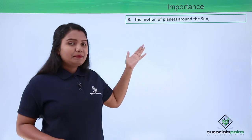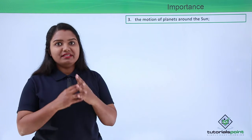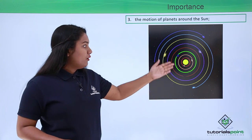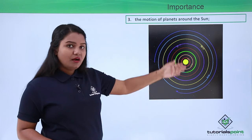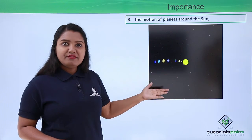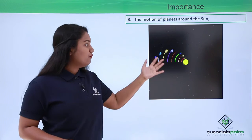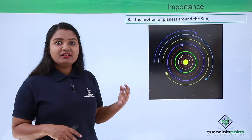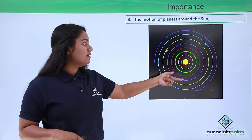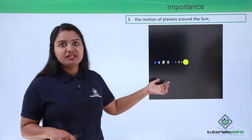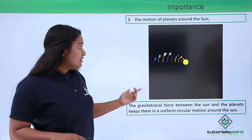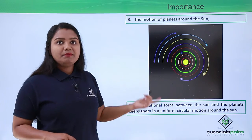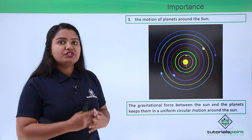The motion of the planets around the sun is also due to this gravitational force. All the planets in the solar system orbit the sun in roughly circular orbits, and the centripetal force required for this motion is supplied by the gravitational pull that the sun exerts onto all the planets revolving around it, keeping them in uniform circular motion.